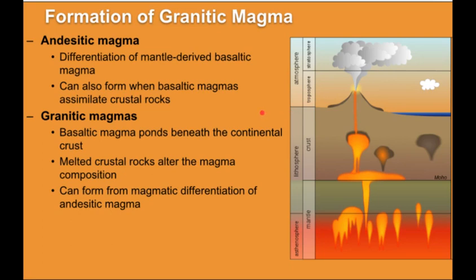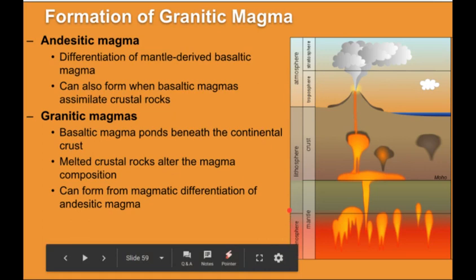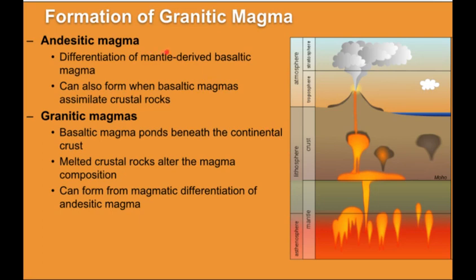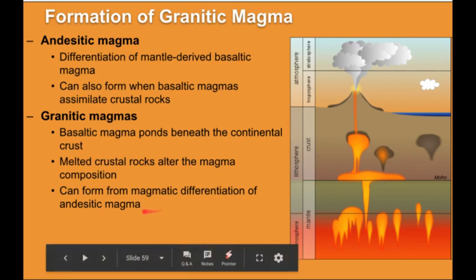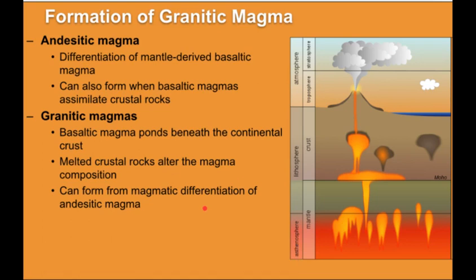This is how we get these different types of magmas. As magma moves through the crust, it goes through this distillation process. Andesitic, or intermediate, magma is created from the differentiation of basaltic magma, and can also be created when basaltic magmas assimilate more felsic continental crust. Granitic magmas can also be created this way, especially when basaltic magma ponds beneath the continental crust as in convergent subduction zones, or from differentiation of andesitic magma through crystal settling or partial melting.